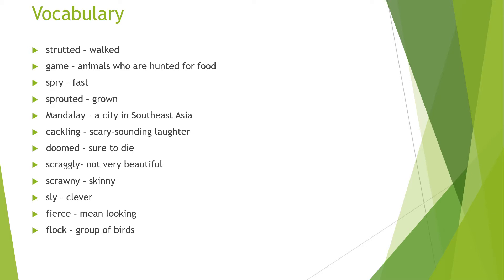Doomed is sure to die. Scraggly means not very beautiful. Scrawny means skinny. Sly means clever. Fierous means mean looking. And flock is a group of birds.